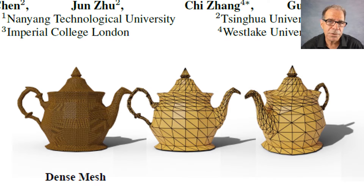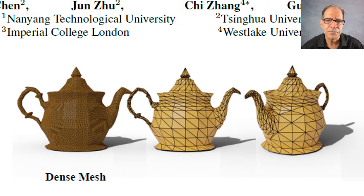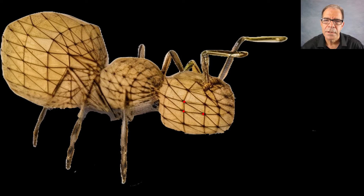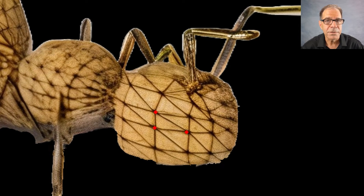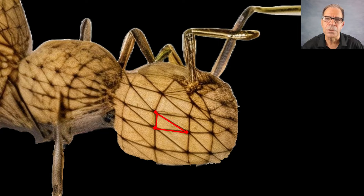From a computational standpoint, it's made up of vertices, edges, and faces, where vertices are like corner points. Edges are straight lines that connect those points, and faces are the flat surfaces enclosed by those edges.